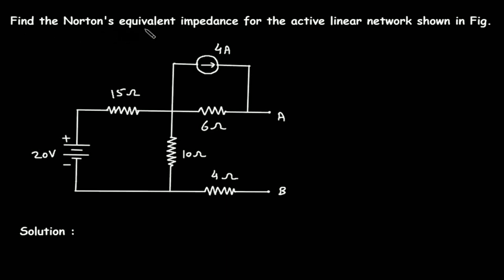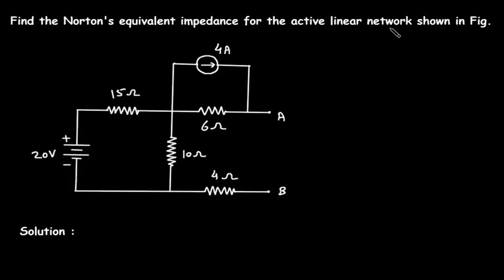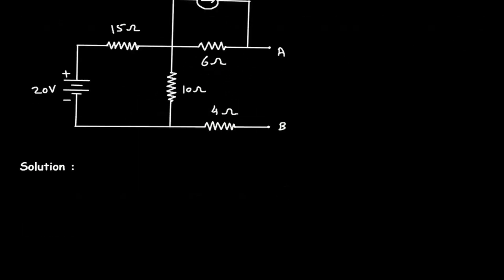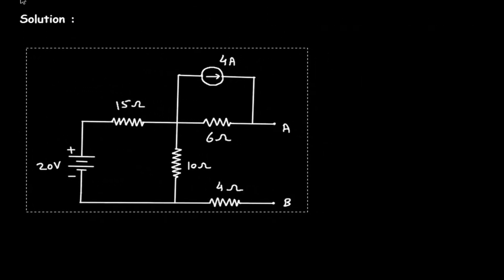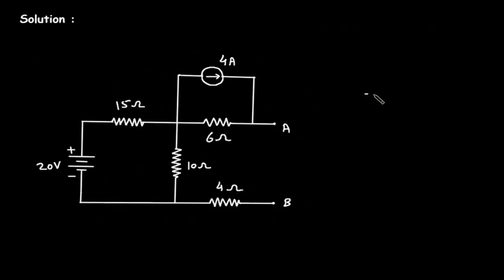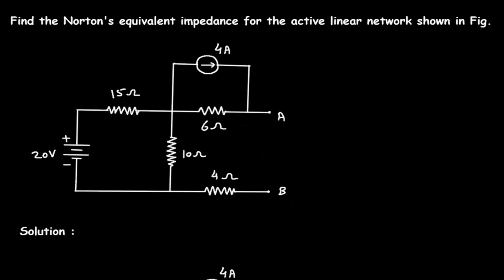Find the Norton's equivalent impedance for the active linear network shown in the figure. We have to find Zn, that is Norton's equivalent impedance.